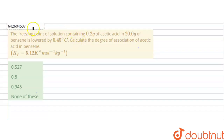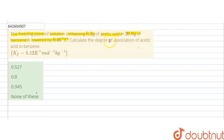Hello students. The question is: the freezing point of a solution containing 0.2 gram of acetic acid in 20 gram of benzene is lowered by 0.45 degree Celsius. Calculate the degree of association of acetic acid in benzene. Kf is given as 5.12 Kelvin per mole per kilogram.